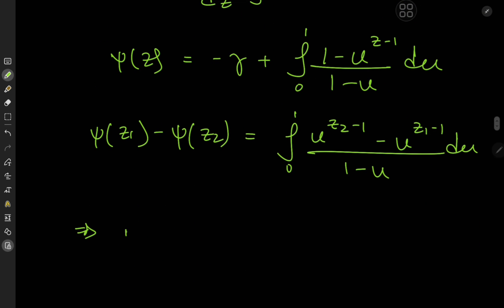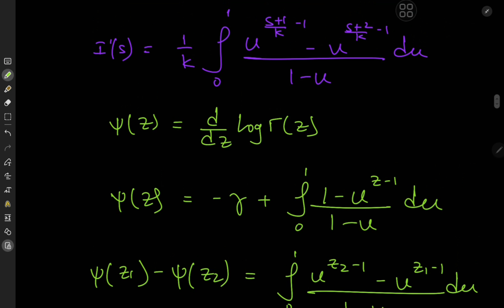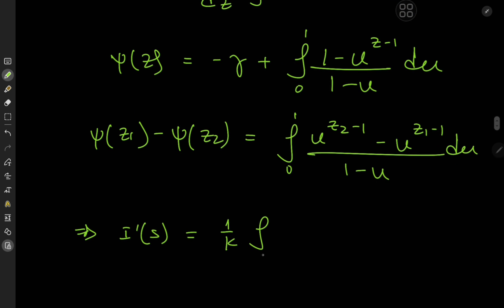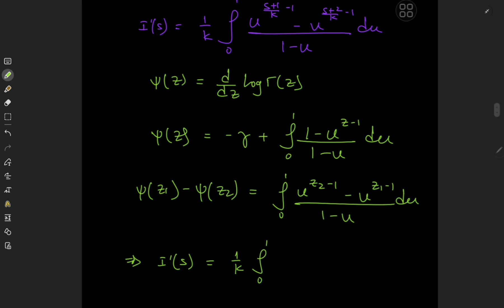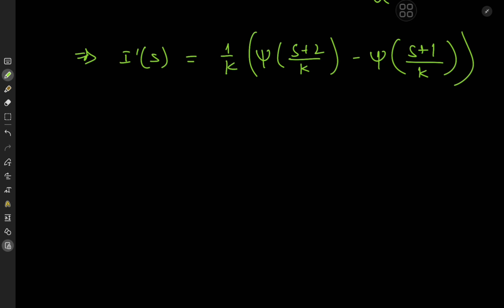That means the integral that we have can be expressed in terms of a difference of digamma functions. So this implies that I prime of s equals 1 by k times digamma s plus 2 by k minus digamma s plus 1 by k. So the whole objective of Feynman's trick is to evaluate the derivative of the integral function, and once we have I prime completely in terms of its parameter, we plan to recover the integral function by integrating with respect to the parameter.